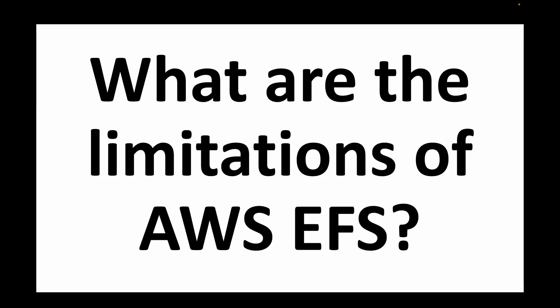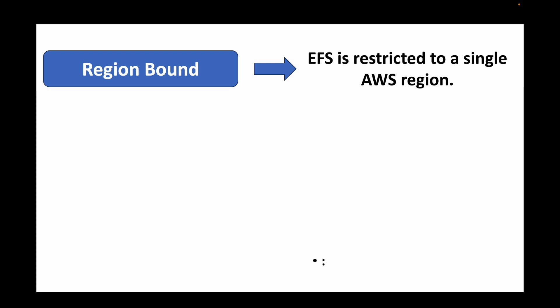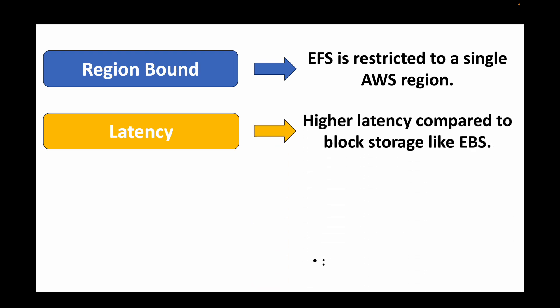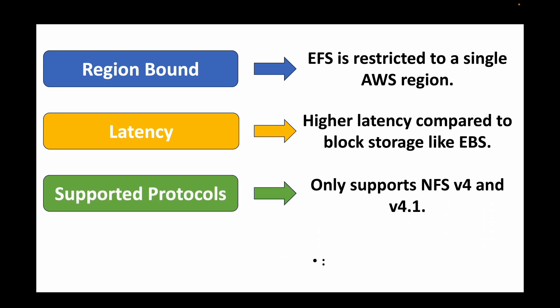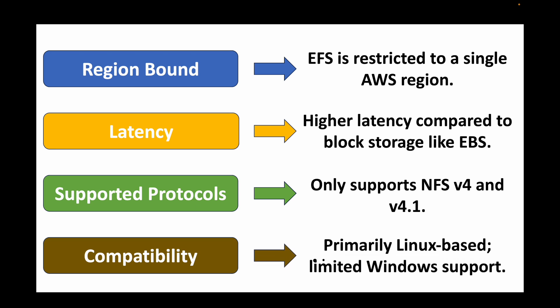The next question is: what are the limitations of AWS EFS? First, it is region-bound — EFS is restricted to a single AWS region, so if created in US East (N. Virginia), it can only be accessed there. Second, it has higher latency compared to block storage like EBS. Third, it only supports NFS v4 and v4.1 protocols. Finally, it is primarily Linux-based with very limited support for Windows machines, making it challenging to use on Windows.